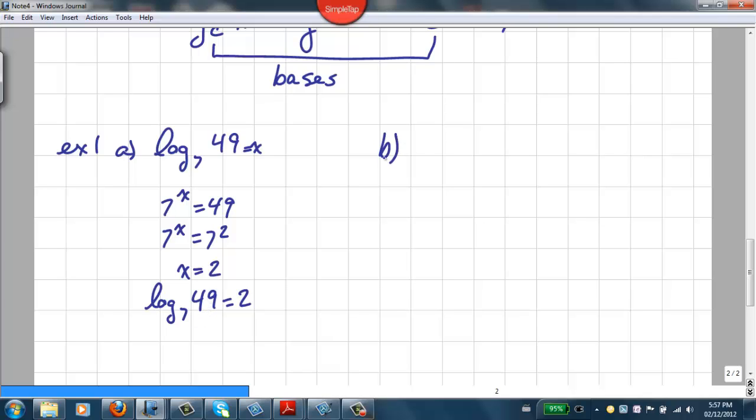Here's another example. If I have log base 6 of 1 equal to x, then we can figure out what x is by saying that 6 to the x is equal to 1. Now the only exponent that we can raise 6 to that gives us 1 would be 6 to the 0. That means x is equal to 0. I could have also gone 6 to the x is equal to 6 to the 0, therefore x is equal to 0.